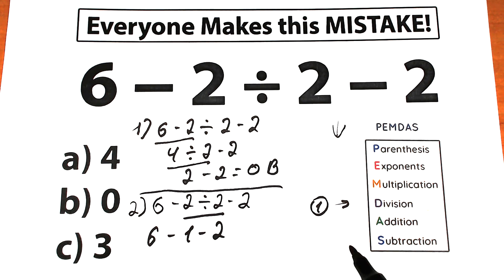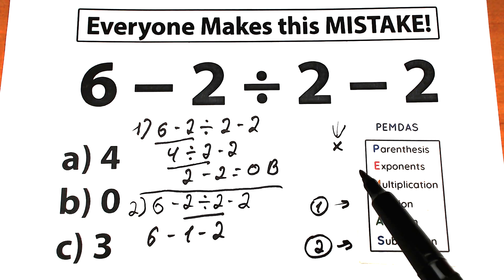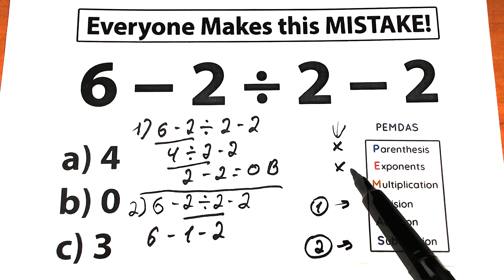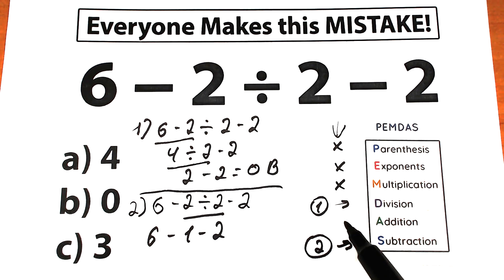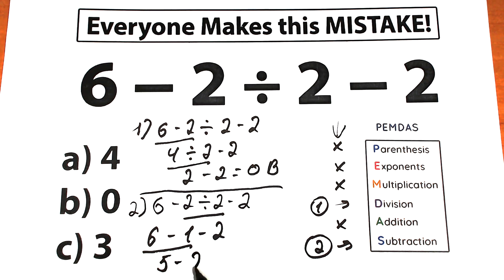Our second step is subtraction. As we have no parentheses, no exponents, no multiplication, and no addition, we go straight to subtraction in strict order from left to right. 6 minus 1 equals 5. Then 5 minus 2 equals 3. This is option C.